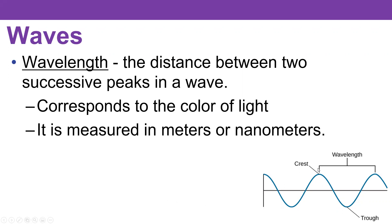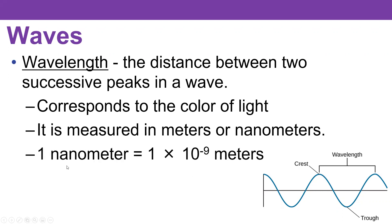Now you can measure the crest-to-crest distance in meters if we're talking about a water wave. But for a light wave, it's really small. It's on the order of a nanometer, which is 1×10⁻⁹ meters, or one billionth of a meter.